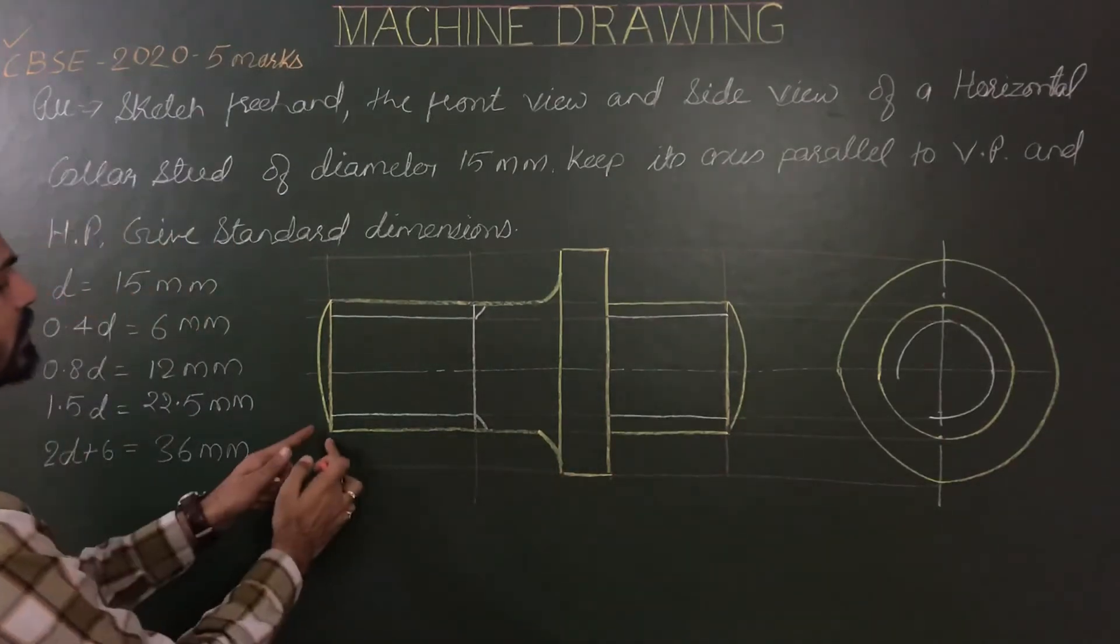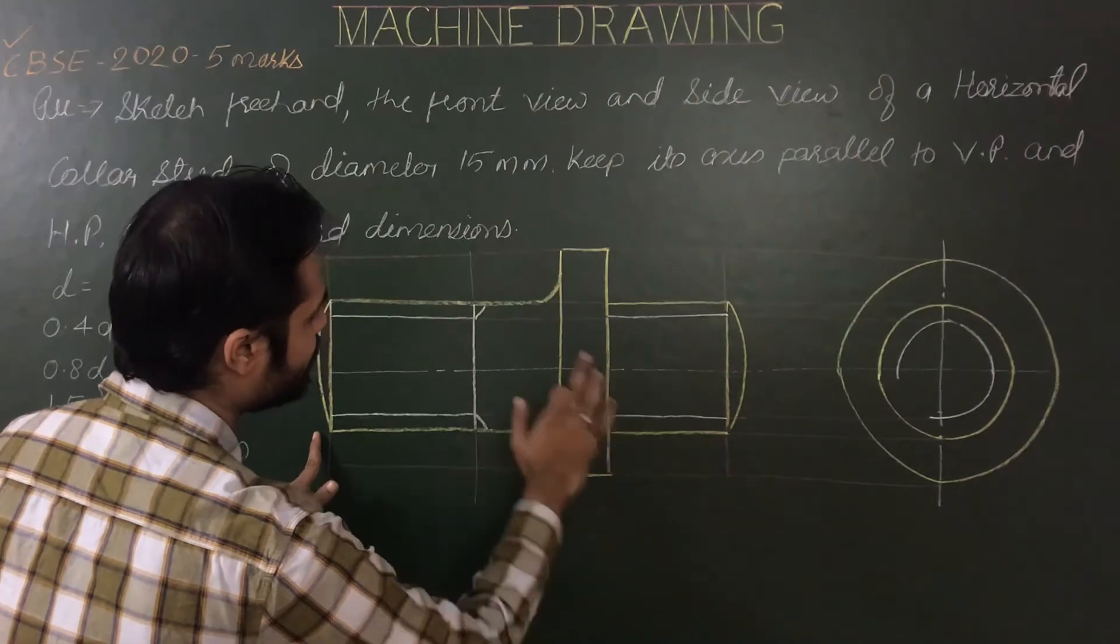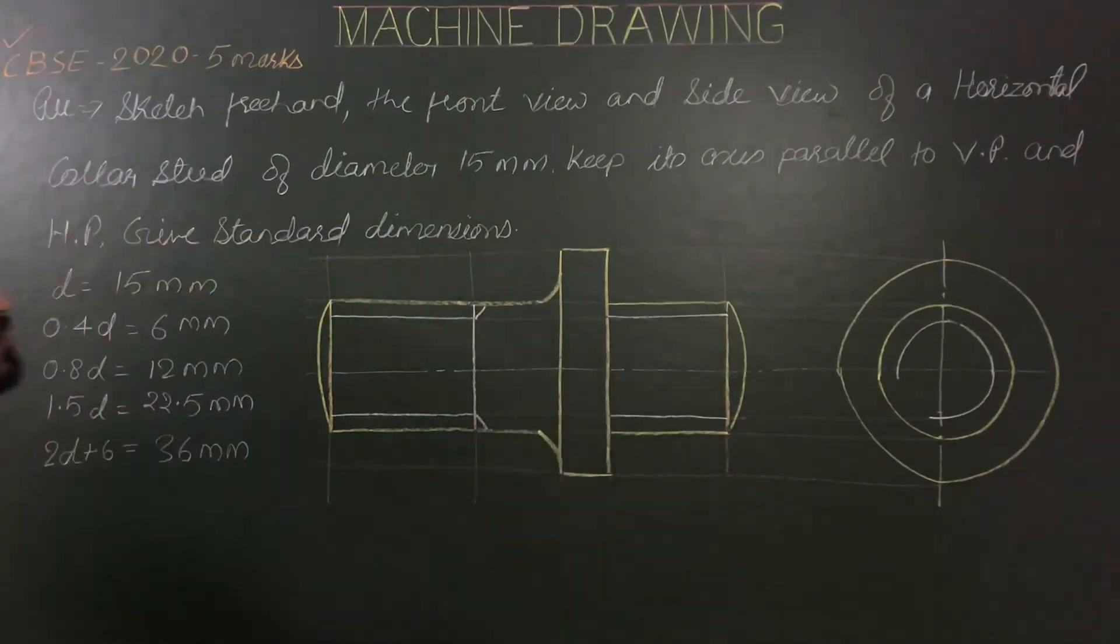Collar thickness 0.4d, length of the nut end 2d plus 6, length of metal end d, and central portion around 0.5d to 0.7 of d.